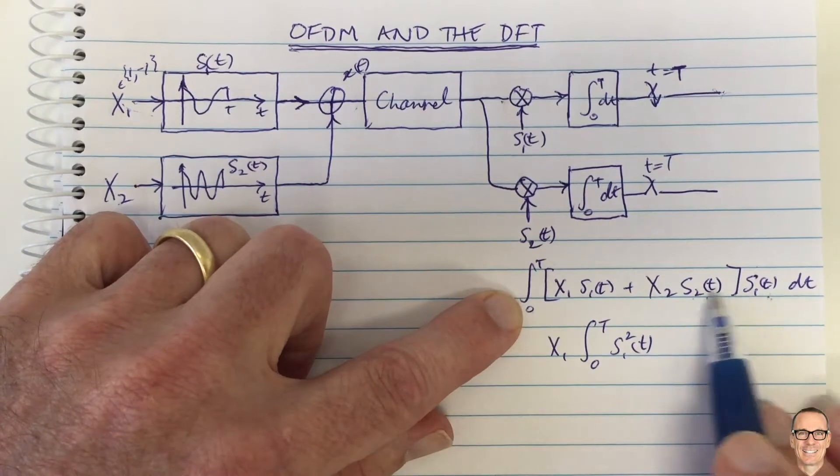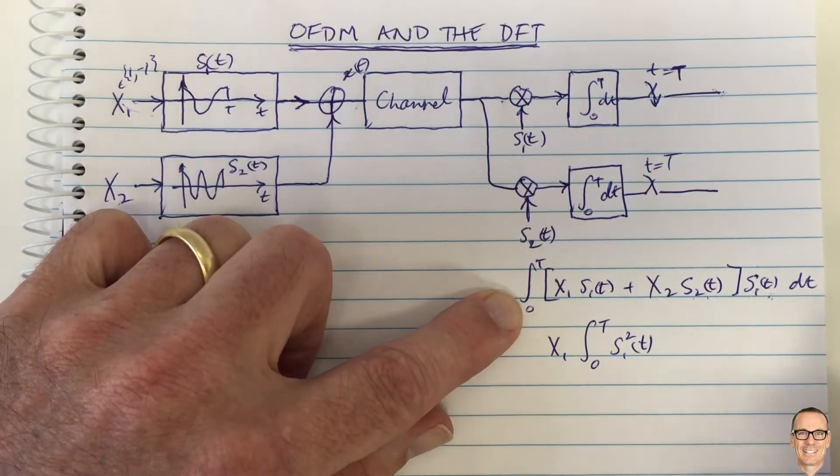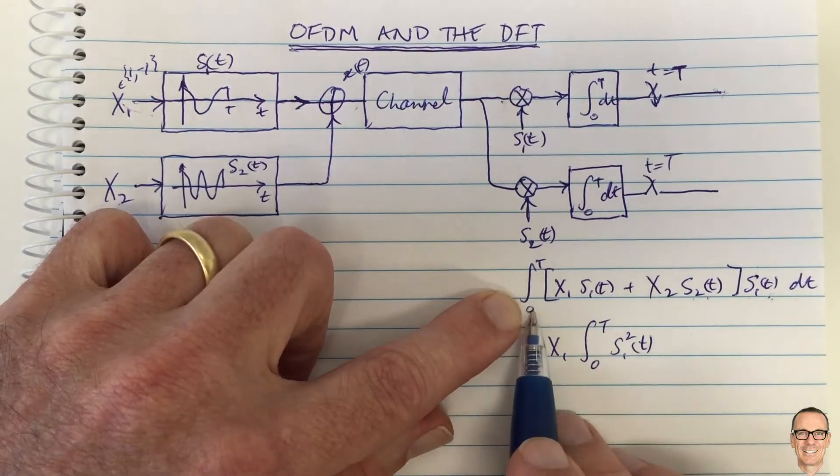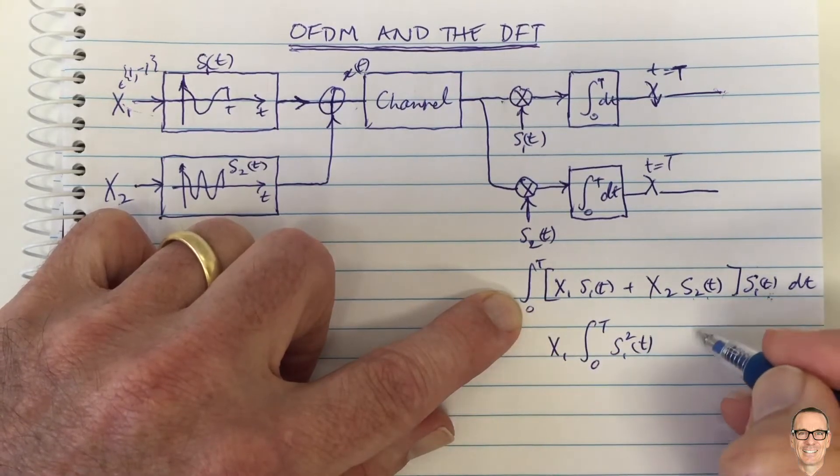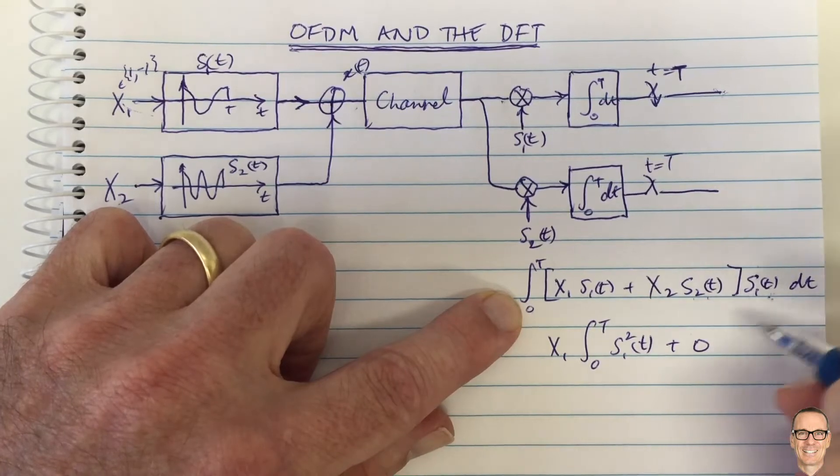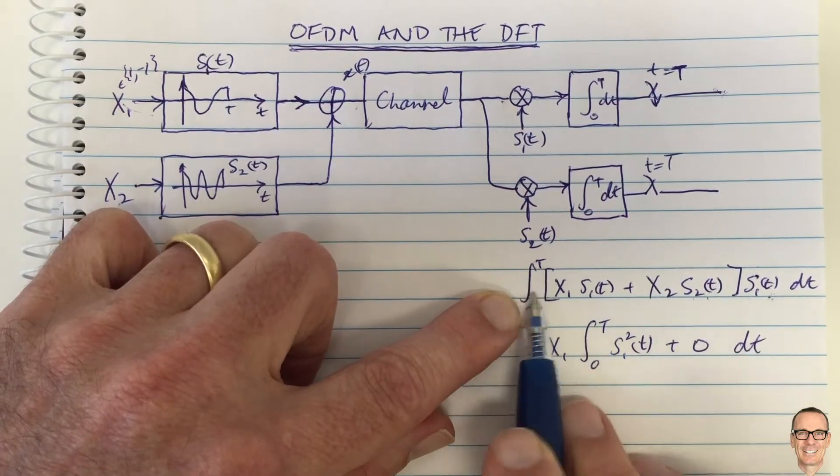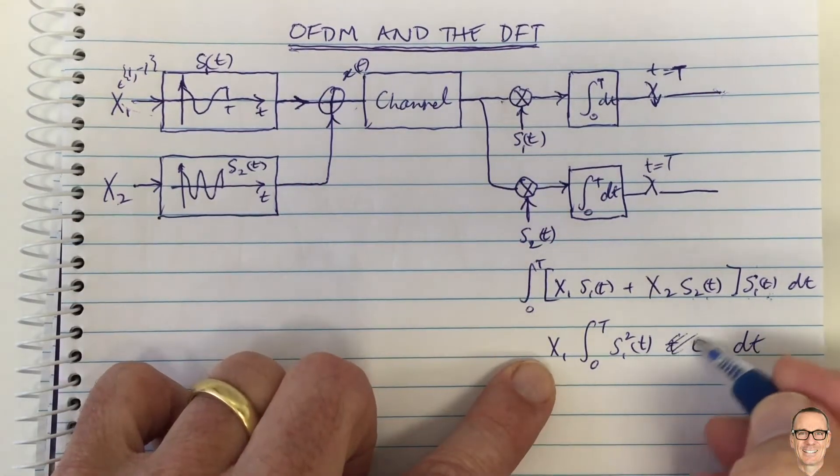And the s2 times s1, when they're integrated, because they are orthogonal—and again for more information on this there's a video on orthogonality of functions—because they're orthogonal over the period of 0 to capital T, then the effect of those is going to add 0 into this integral here. So that term disappears and equals 0.